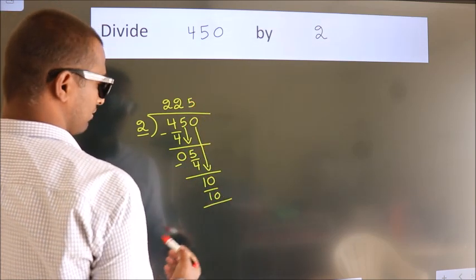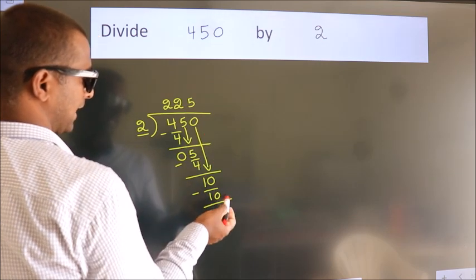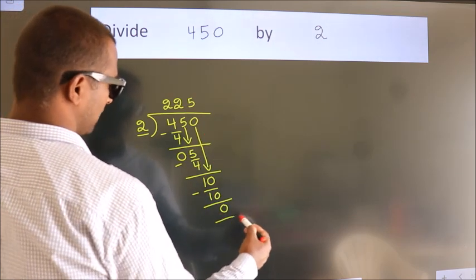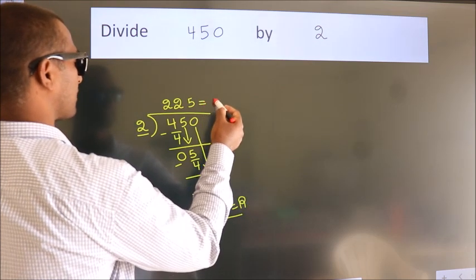Now we subtract. We get 0. No more numbers to bring it down. So we stop here. This is our remainder. This is our quotient. Thank you.